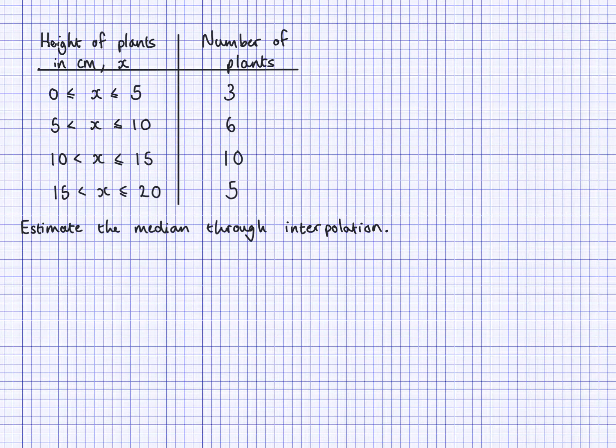Now, what I need to do is estimate the median through interpolation. So I know to find the median, I need to find the middle position, so I need to know what these add up to. It is useful to write the cumulative frequencies on the side, so there will be 3 here, 9, 9 add 10 is 19, and 19 add 5 is 24. So it's worth writing those out, because we're going to use them again afterwards.